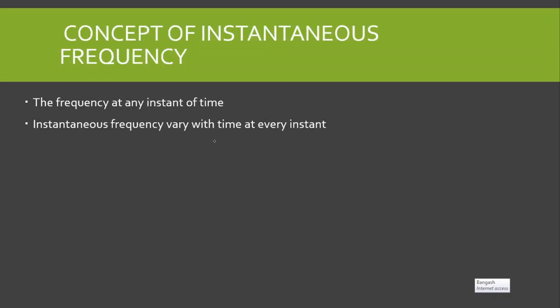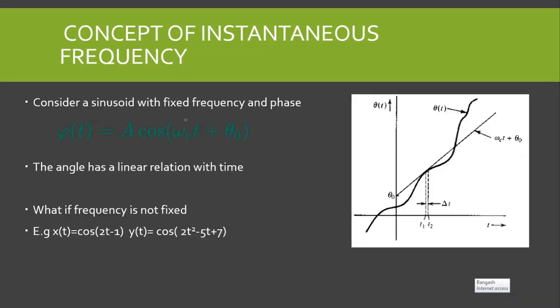What is the concept of instantaneous frequency? Instantaneous frequency is the frequency at any instant of time; it varies with time at every instant. Now consider a sinusoid with fixed frequency and phase. Suppose that sinusoid is given by cosine of (omega c·t plus theta naught). The angle theta of t has a linear relation with time.